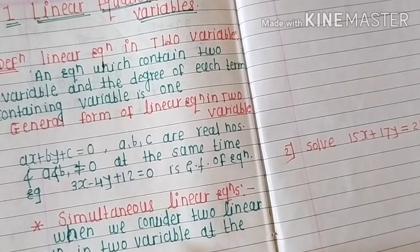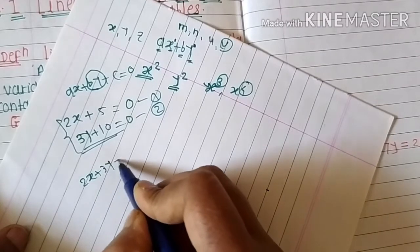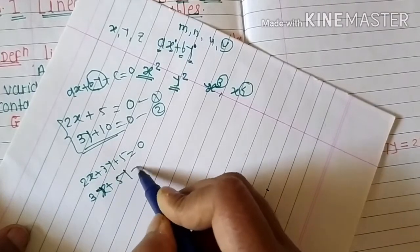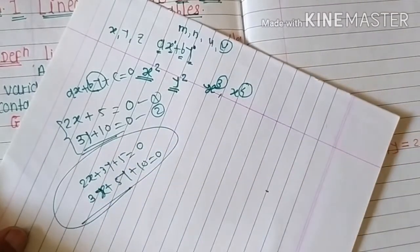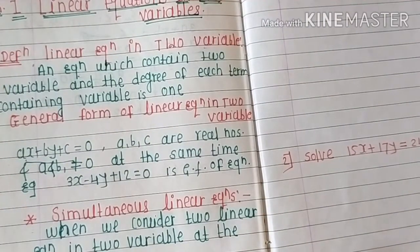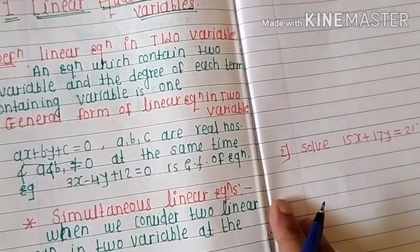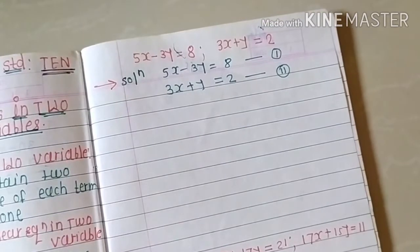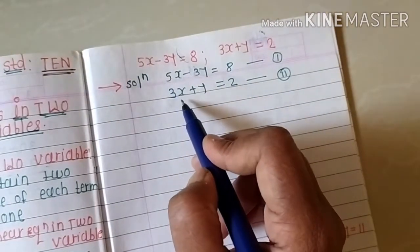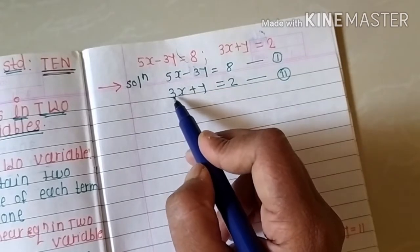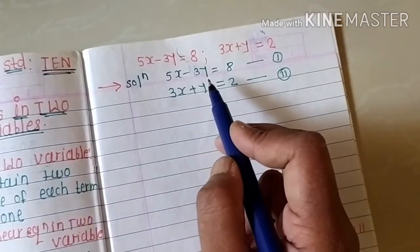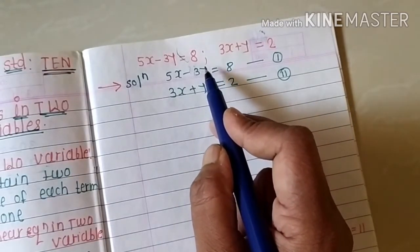For example, 2x plus 3y plus 5 equals zero and 3x plus 5y plus 10 equals zero form a simultaneous equation. To solve simultaneous equations, first observe the coefficients of x and y. If both coefficients are the same, directly take addition or subtraction to cancel out either the x term or the y term and find the remaining variable.